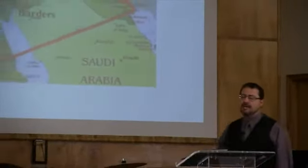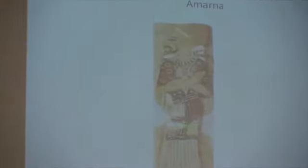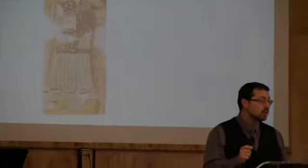Here's a picture of an Egyptian carving of a Habiru prisoner, which was found in the tombs of Amarna in Egypt — some physical evidence for you. Most modern liberal scholars will reject the notion that the Habiru spoken of in all those ancient sources refer to the Hebrews found in the Bible, because that does not fit their liberal theory that the Bible is historically inaccurate.